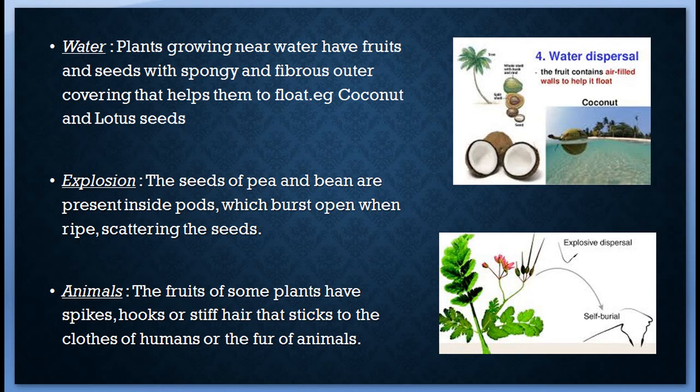Another agent is explosion: the seeds of pea and bean are present inside pods which burst open when ripe, scattering the seeds. Animals are also agents of dispersal. The fruit of some plants have spikes, hooks, or stiff hair that stick to the clothes of humans or the fur of animals, and drop while the animals move. Xanthium fruit, tiger nail, and spear grass are dispersed in this way.